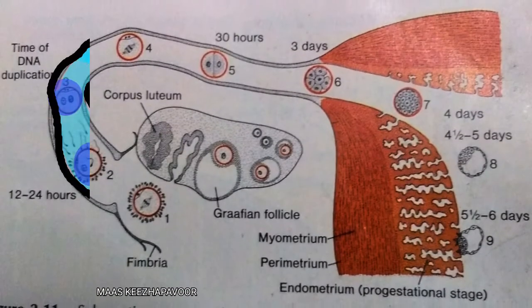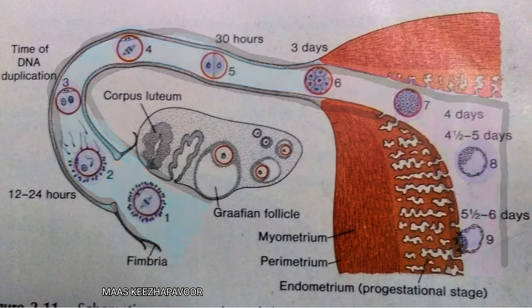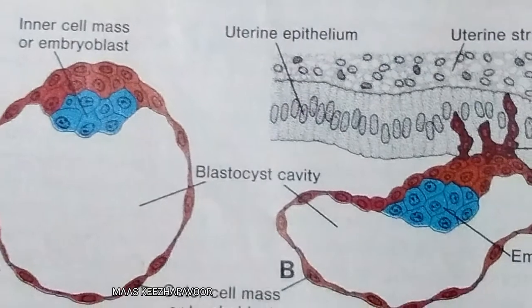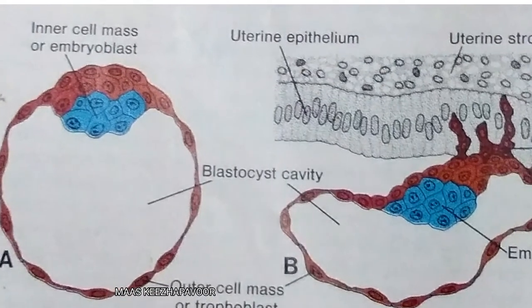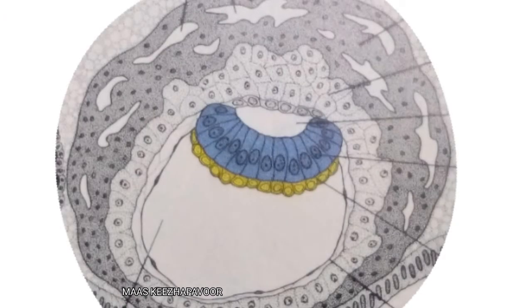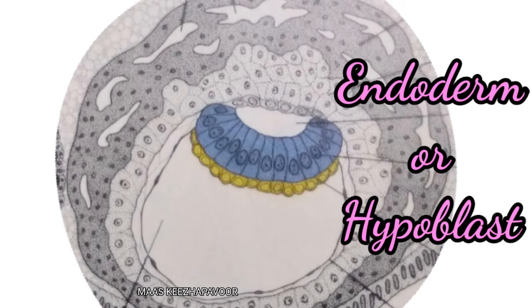The trophoblast penetrates through the endometrium at the embryonic pole and gets embedded in the endometrium. This is called implantation. The zygote takes 3–4 days to reach the uterine cavity and then gets implanted. The inner cell mass differentiates to form the germ layers. Some cells of the inner cell mass become cuboidal and get arranged as a layer.